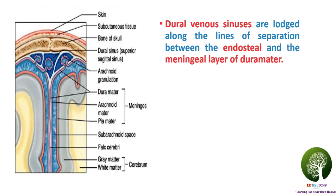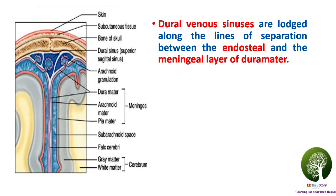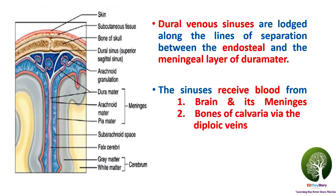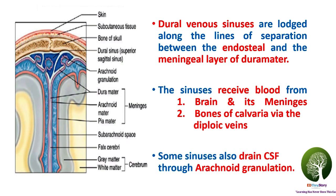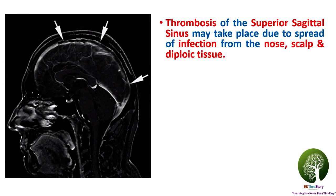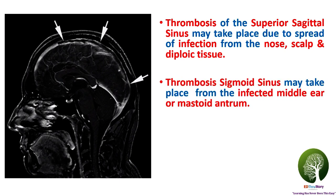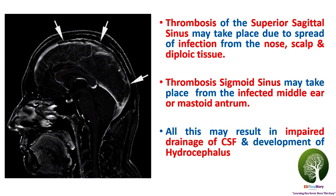Now let's learn some high yield facts about dural venous sinuses. Dural venous sinuses are lodged along the lines of separation between the endosteal and the meningeal layer of the dura mater. The sinuses receive blood from the brain and its meninges and from bones of the calvaria via the diploic veins. Some sinuses also drain CSF through the arachnoid granulations. Thrombosis of the superior sagittal sinus may take place due to spread of infection from the nose, scalp, and diploic tissue. Thrombosis of the sigmoid sinus may take place from the infected middle ear or mastoid antrum. All this may result in impaired drainage of CSF and development of hydrocephalus.